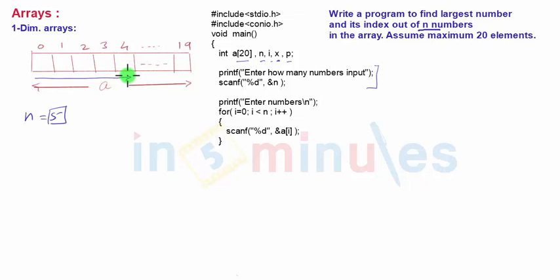Then we'll input those numbers in the array by using a for loop: i=0 to i<n. So i will take values 0, 1, 2, 3, 4, and this will input a[0] to a[4] numbers.